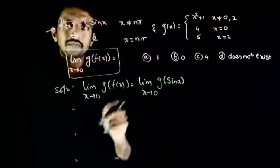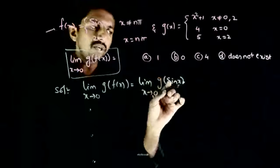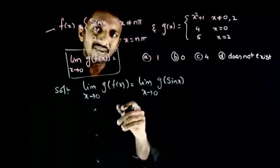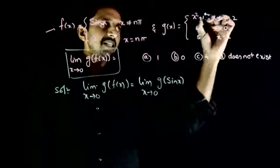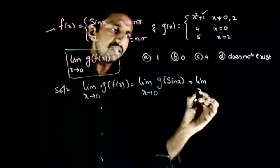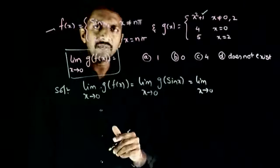Now as x tends to 0, sin x tends to 0 but sin x is not equal to 0. Sin x will be around 0 but not equal to 0, so the function g(x) equals x² + 1 will apply. That is, limit x tends to 0, g(x) equals x² + 1 applies.